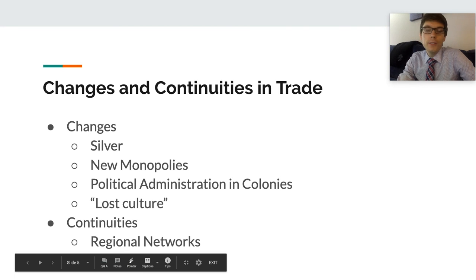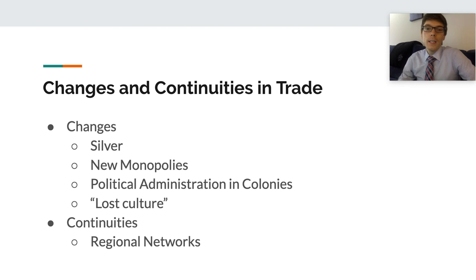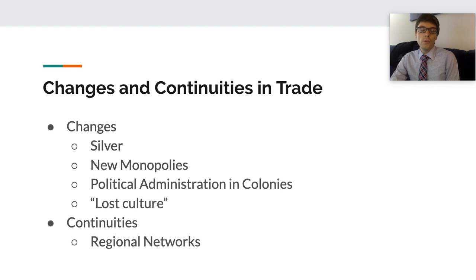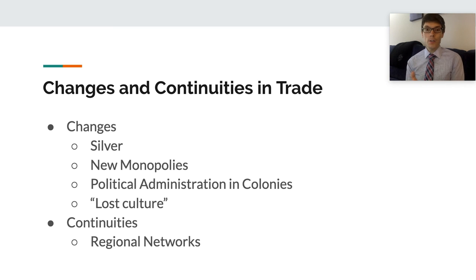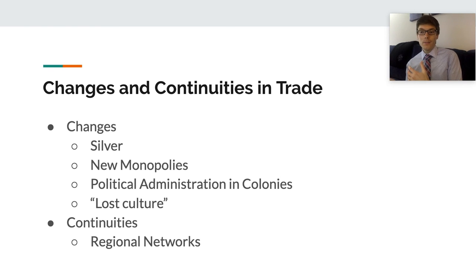Changes and continuities in trade: the trading networks involved a new global circulation of goods, wealth, and labor. Silver from the Spanish colonies in the Americas flowed to Asia, where Asians eagerly exchanged their goods — silks, porcelain, and steel — for silver. One of the problems in early trade, especially during the networks of exchange in Unit 2, was that Europe didn't really have anything Asia wanted, whereas Europe wanted the luxuries coming out of Asia. That changed when silver entered the equation.